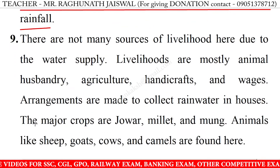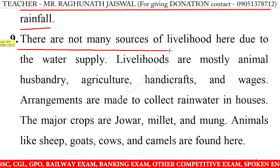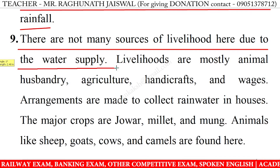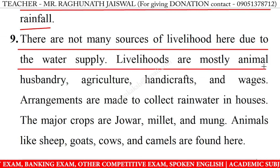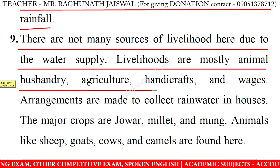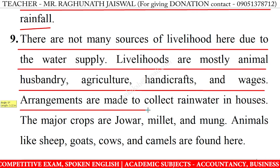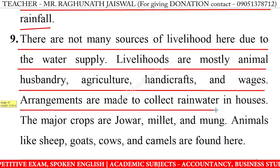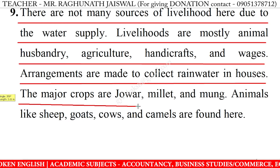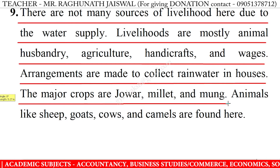9. There are not many sources of livelihood here due to the limited water supply. Livelihoods are mostly animal husbandry, agriculture, handicrafts, and wages. Arrangements are made to collect rainwater in houses. The major crops are jowar, millet, and moong.